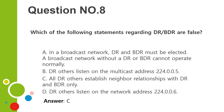Question number eight. Which of the following statements regarding DR and BDR are false? A. In a broadcast network, DR and BDR must be elected. A broadcast network without a DR or BDR cannot operate normally. B. DR others listen on the multicast address 224.0.0.5. C. All DR others establish neighbor relationships with DR and BDR only. D. DR others listen on the multicast address 224.0.0.6. Answer: C.